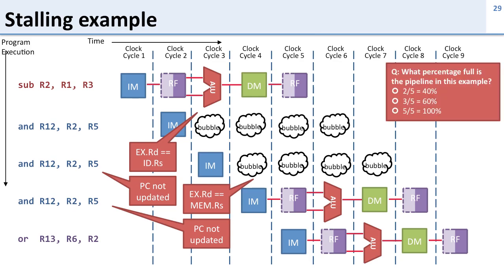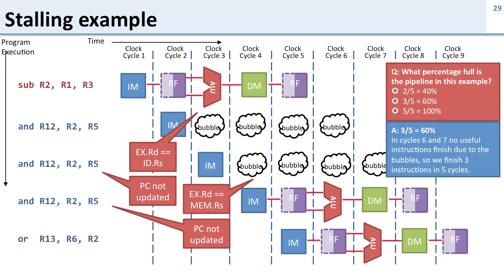When we've inserted these bubbles in the pipeline, what percentage is the pipeline full in this example? How much useful work is there? The answer is only 60%. In the picture, we have three instructions finishing in five cycles. In clock cycles six and seven, we just have bubbles so we don't do any useful work. The efficiency of the pipeline is dependent on keeping it full of useful instructions.